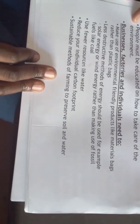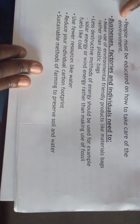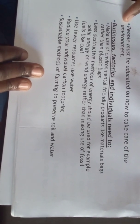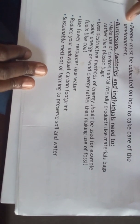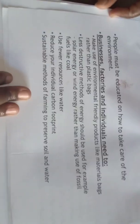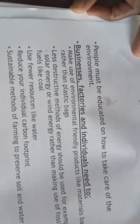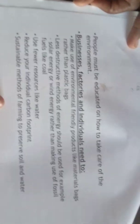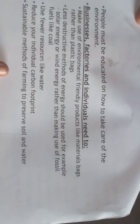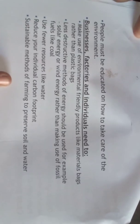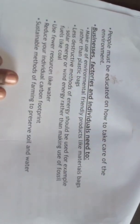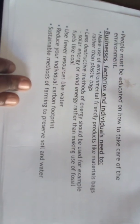We can also use fewer resources like water and reduce our own carbon footprint. For example, when you drive a car every day you are releasing exhaust fumes into the atmosphere. If you want to reduce your carbon footprint, instead of driving you can make use of public transport — buses and trains — to go to work. We can also use sustainable methods of farming to preserve our soil and water.